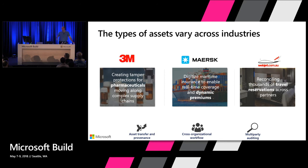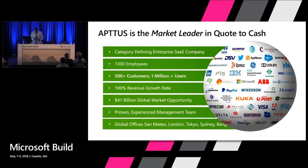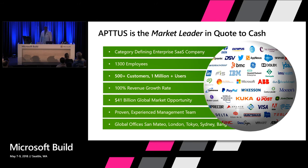I'd like to invite up Corey Haynes from our partner Aptus. Corey is going to talk to us about what they're doing. My name is Corey Haynes, I work at Aptus. My role is global financial services vertical head. I run the financial services industries portion. Let me give you a little background about our company — software company, SaaS, 1,300 employees, still small, private, 500-plus customers, a million users, et cetera.